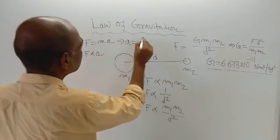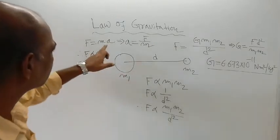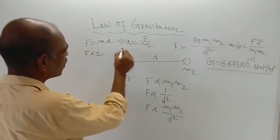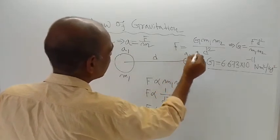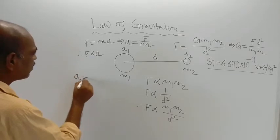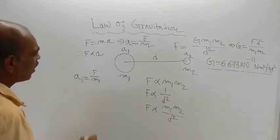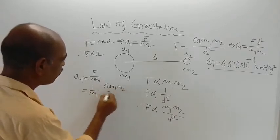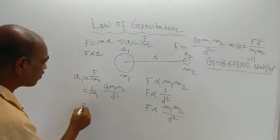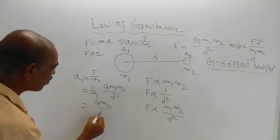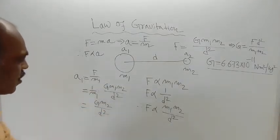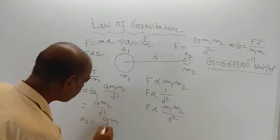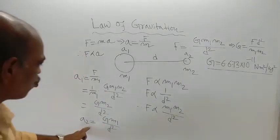Let acceleration of the bigger object be A1 and acceleration of the smaller object be A2. Then A1 equals F divided by M1, and substituting F equals G M1 M2 by D squared, M1 cancels, giving A1 equals G M2 by D squared. Similarly, A2 equals G M1 by D squared.